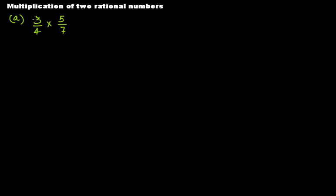In this problem we have two rational numbers 3 over 4 and 5 over 7 and we have to multiply these two rational numbers. Whenever you are multiplying two rational numbers, simply multiply the numerators together and the denominators together. So this gives you 15 over 28.